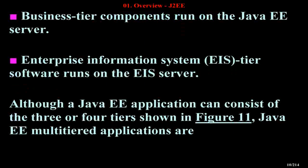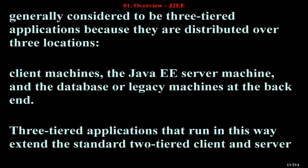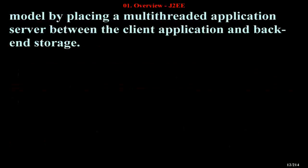Although a Java EE application can consist of three or four tiers, Java EE multi-tiered applications are generally considered to be three-tiered applications because they are distributed over three locations: client machines, the Java EE server machine, and the database or legacy machines at the back end. Three-tiered applications extend the standard two-tiered client-server model by placing a multi-threaded application server between the client application and back-end storage.